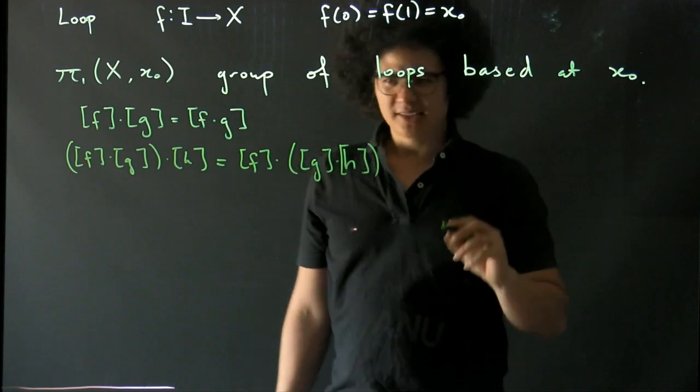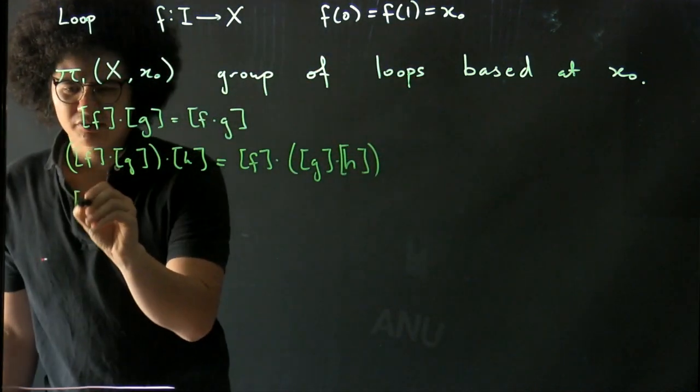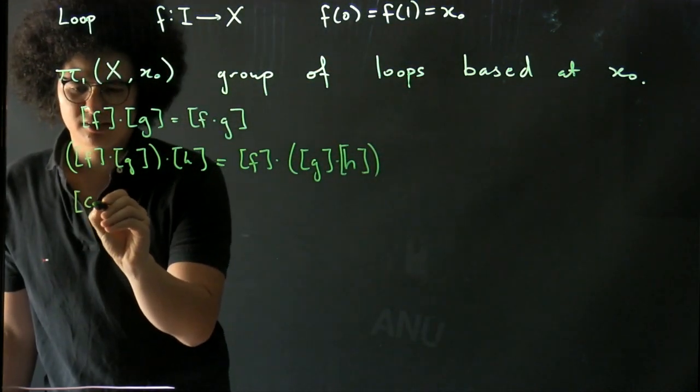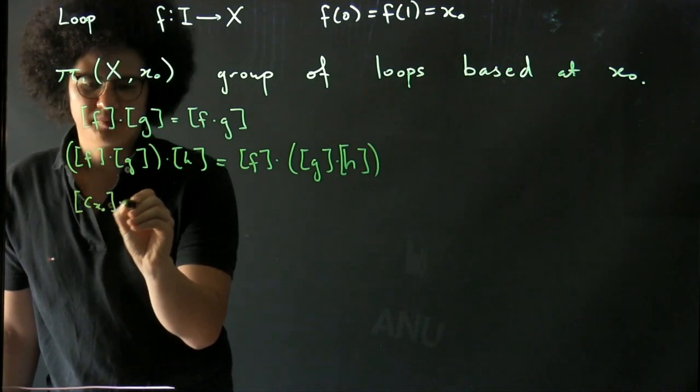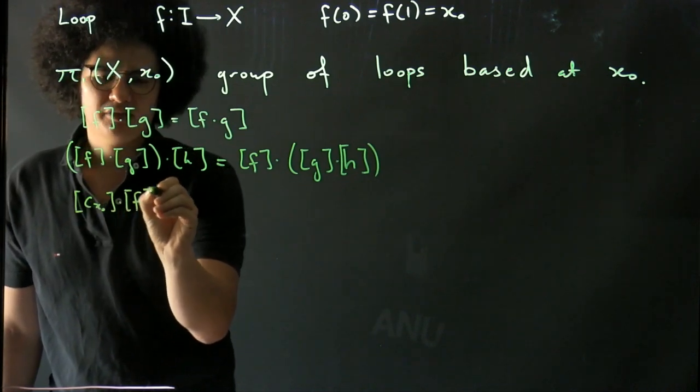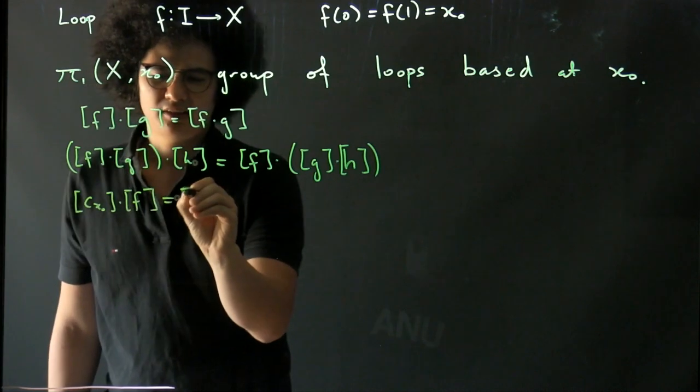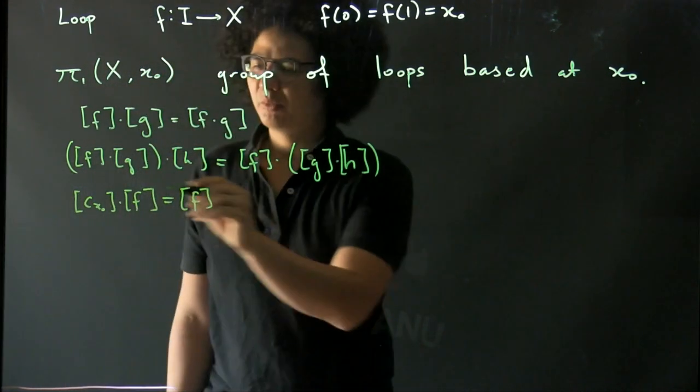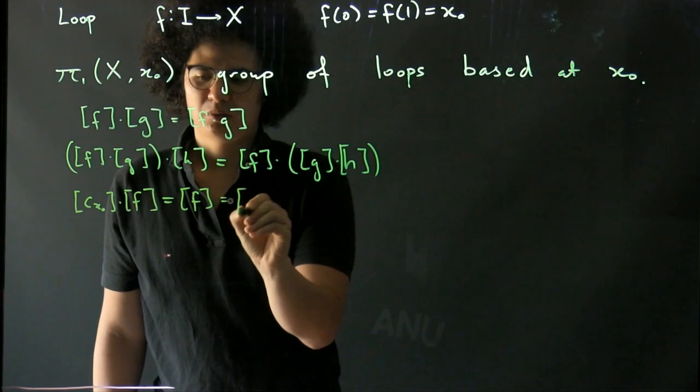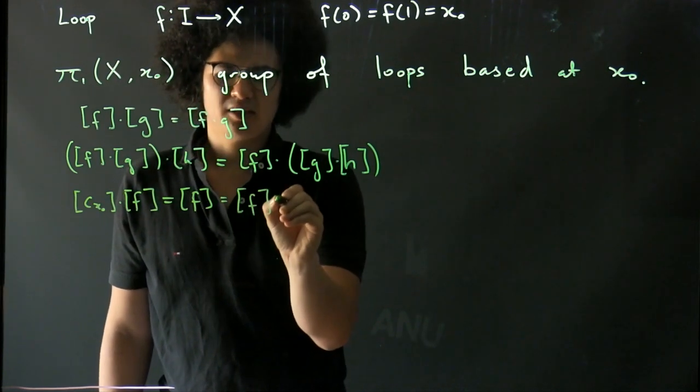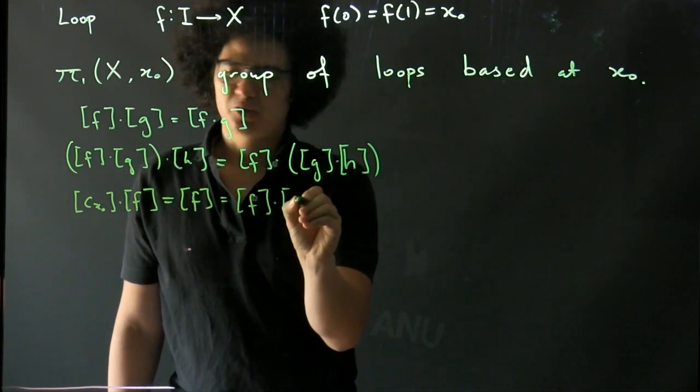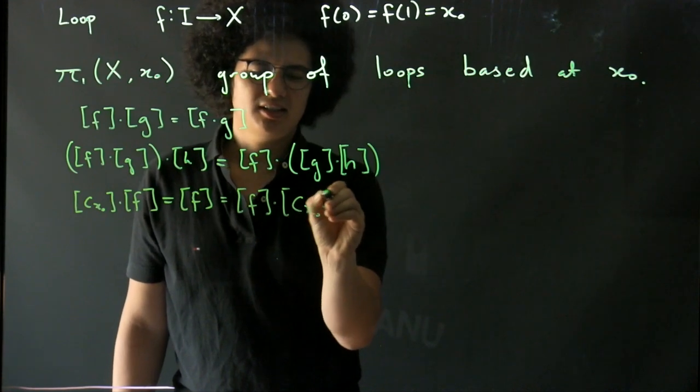We've seen that we have an identity element, so that is for instance C x₀ composed with F is F, and again because it's a loop, we have the same homotopy class of paths multiplying on the other side to act as the identity.